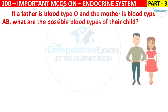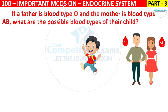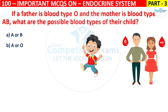If a father is blood type O and the mother is blood type AB, then what are the possible blood types of their child? Your options are A or B blood types, A or O blood types, AB or O blood types, or O blood type only.